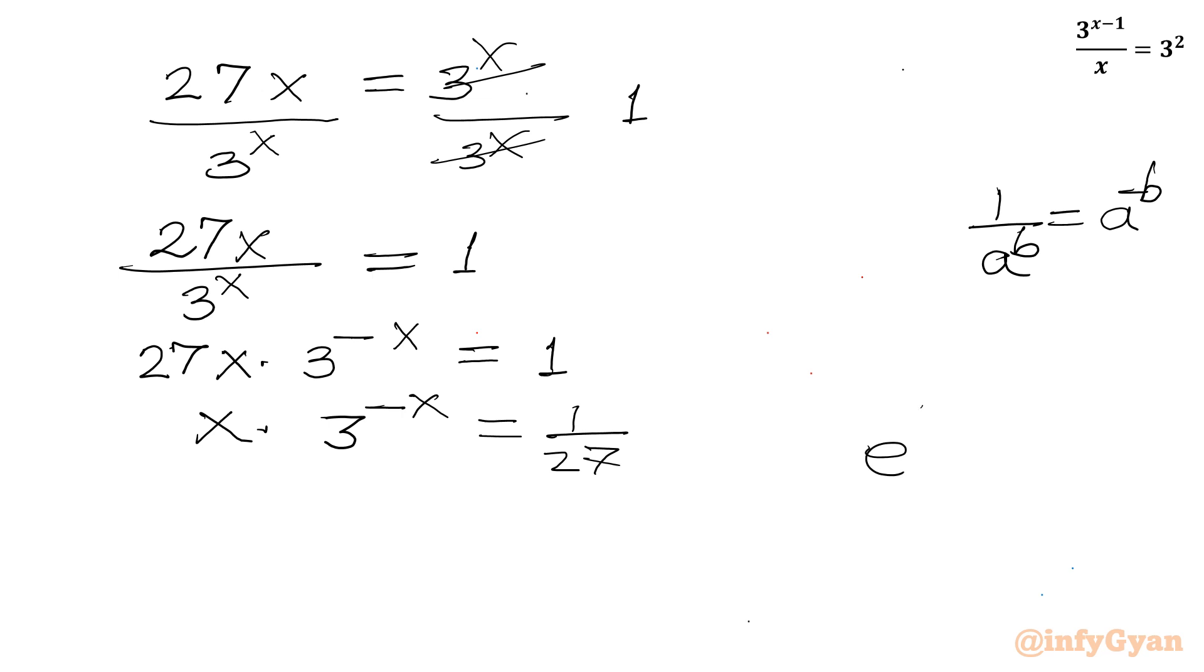Now e raised to the power of ln x equals x. So e raised to the power of ln 3 equals 3. So we can replace this 3 by e raised to the power of ln 3. So x times e raised to the power of ln 3 to the whole power of minus x equals 1 over 27.